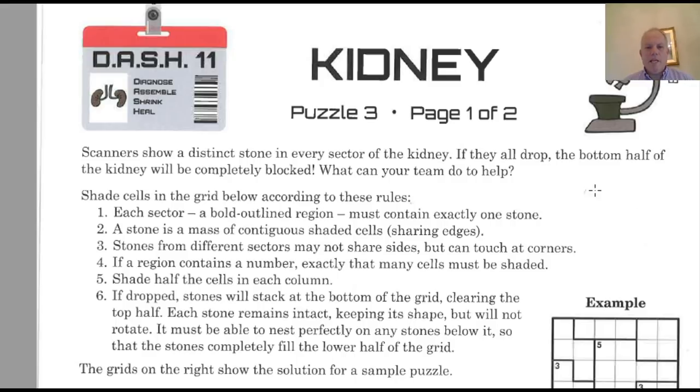and the theme told you that you were doctors dealing with problems in the human body round by round. So we get to round three, and the puzzle we get handed is on two pieces of paper, and it's called Kidney. So I'll show you it as we go through.